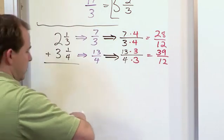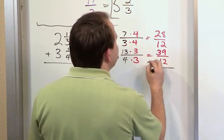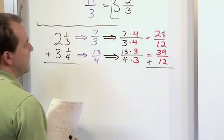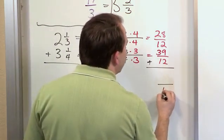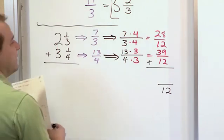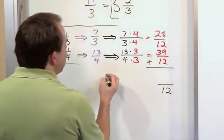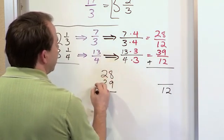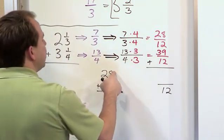And so, we can now add these guys. Because we have two fractions, the twelve is the same denominator in both cases. So what I'm going to have is the twelve come along for the ride, and then what we're going to have to do is add twenty-eight and thirty-nine. Now, if you can't do that in your head, just go off to the side, everyone has to do this, and add these guys together.